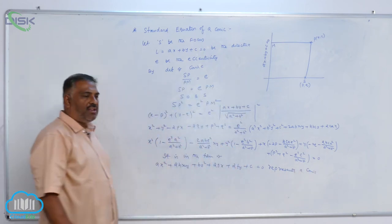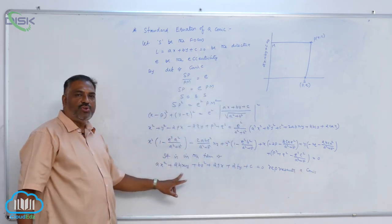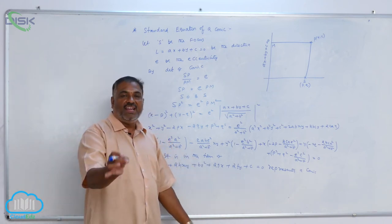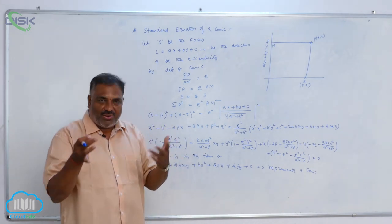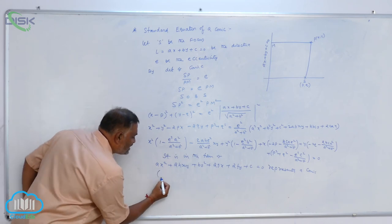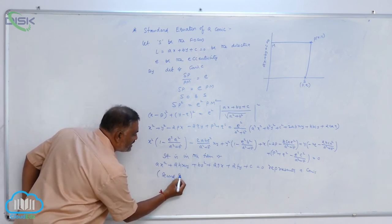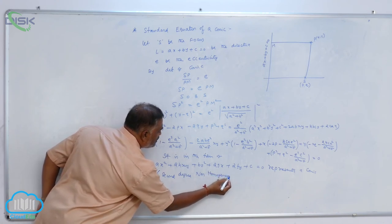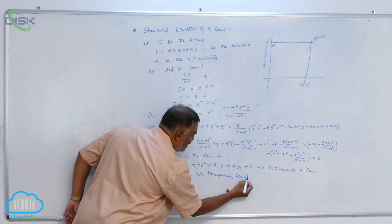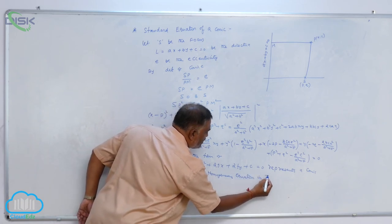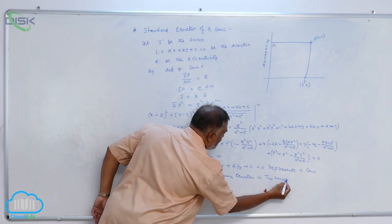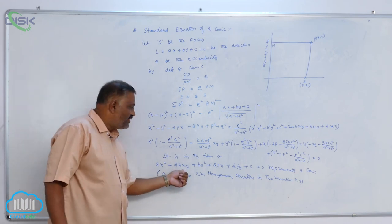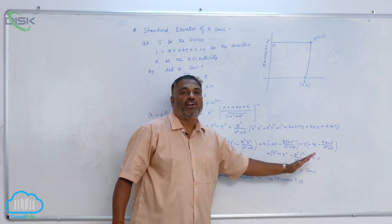But we know that AX square plus 2HXY plus BY square plus 2GX plus 2FY plus C equal to 0 is a second degree non-homogeneous equation. Basically, this equation is second degree, non-homogeneous equation in two variables X comma Y. Now, this is the general name given to this equation. This is always representing a conic.